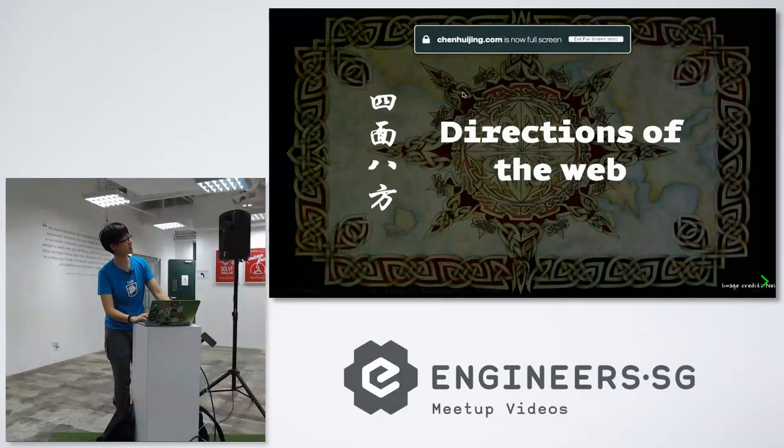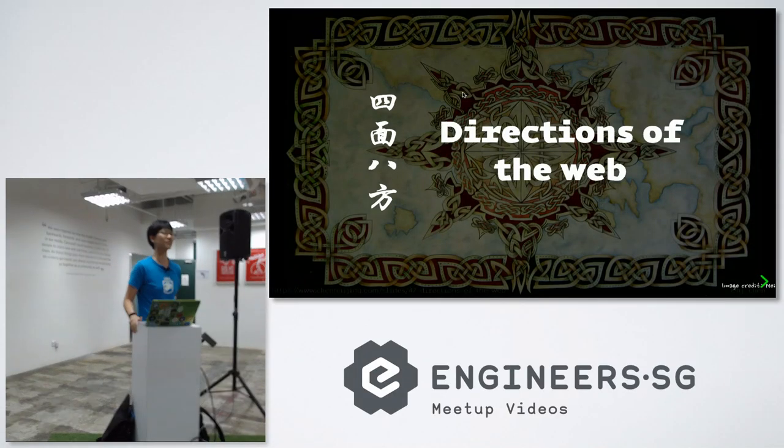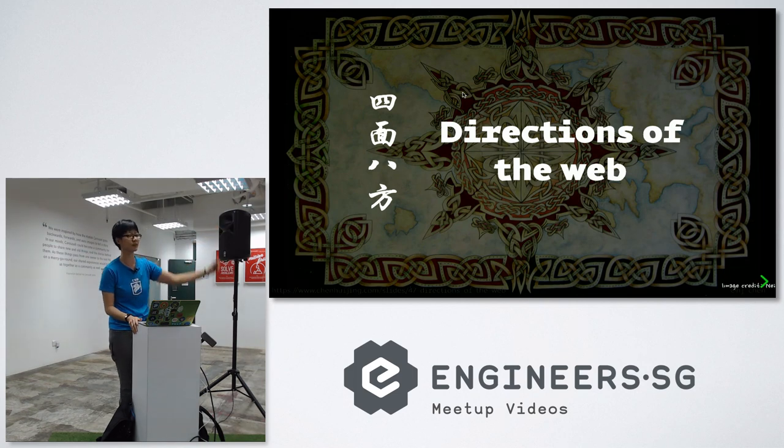Okay, so today my talk is going to be directions of the web. If you understand Chinese, the four words say 四面八方, which means all types of directions.